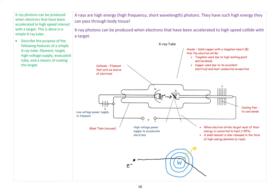This needs to be all enclosed within a vacuum. If there were other particles in here, the electrons would collide with those and wouldn't make it to the target. When the electrons strike the target, most of their energy is converted to heat, and a small amount gets released as X-ray photons. Hopefully now you can describe the purpose of the following features of a simple X-ray tube: the filament as source of electrons, the target where we generate X-rays, the high voltage supply to accelerate electrons, the evacuated tube so we don't get collisions, and the cooling fins to cool the target. Let's keep going.